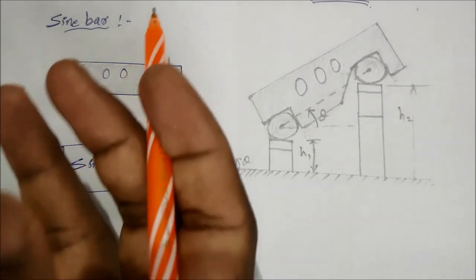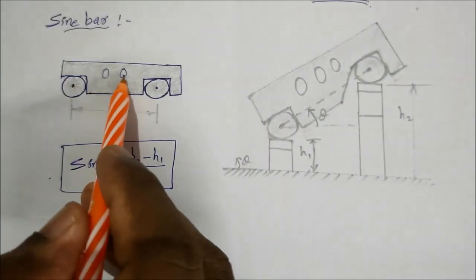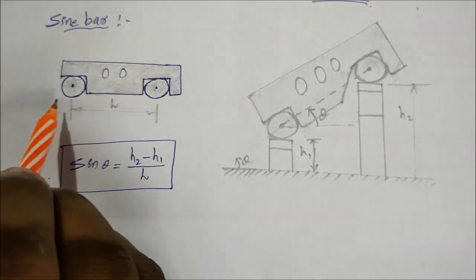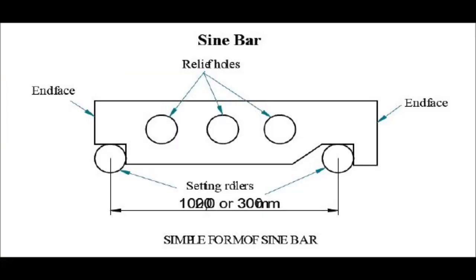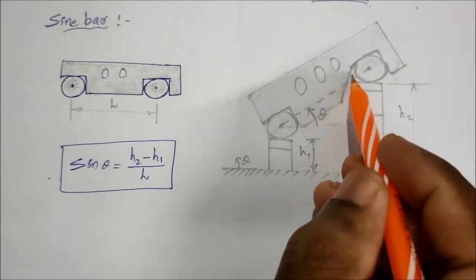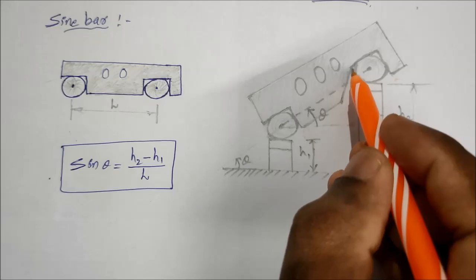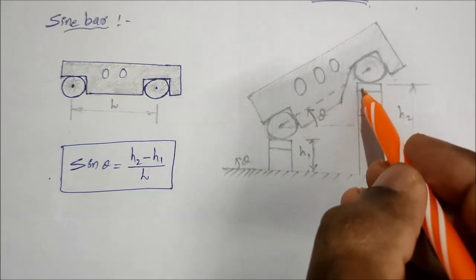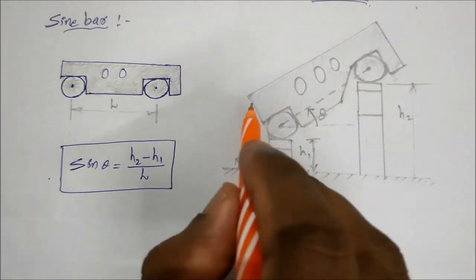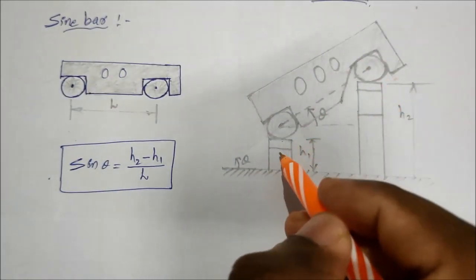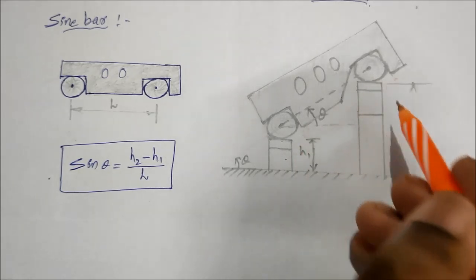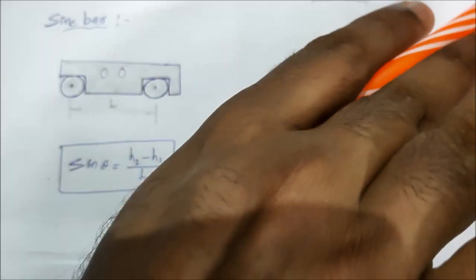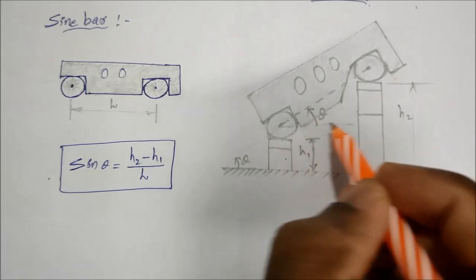The sign bar is used for angular measurements. Both ends have feet that rest on a plane surface. The workpiece is aligned on the same surface, and slip gauges are used — first slip gauge and second slip gauge — with heights h1 and h2. This gives the surface angle, which is parallel to the surface.